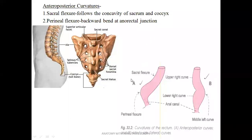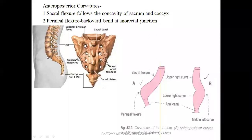There is a curvature anteroposteriorly, and the reason is because of the position or the shape of the vertebra. The vertebra is not straight — it has curvatures. We can see the curvatures in the vertebrae. The location of the rectum is just in front of the vertebral column.